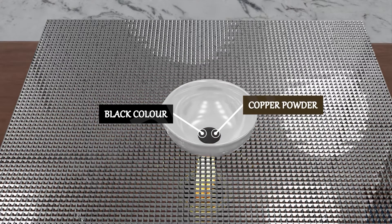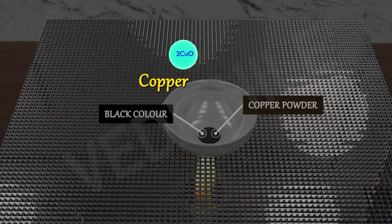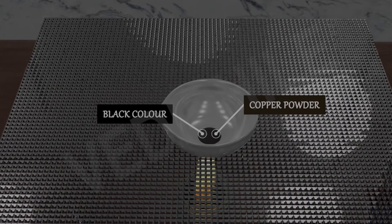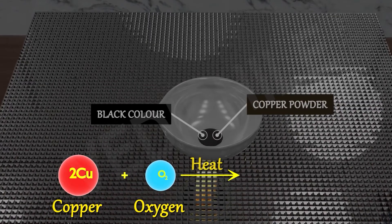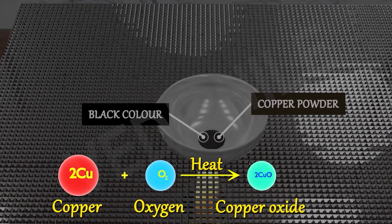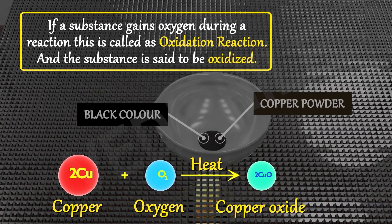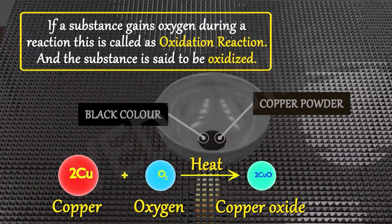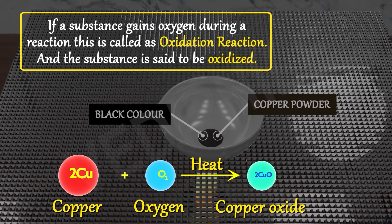Now it has become black, because the copper interacts with atmospheric oxygen and copper oxide is formed. Thus the oxidation reaction is 2Cu plus O₂. In the presence of heat it becomes 2CuO, meaning copper oxide. If a substance gains oxygen during a reaction, this is called an oxidation reaction, and the substance is said to be oxidized.